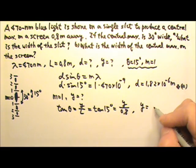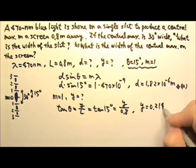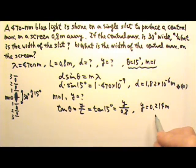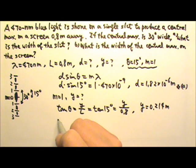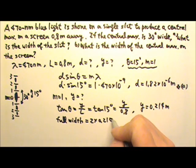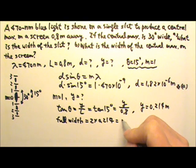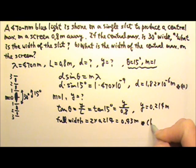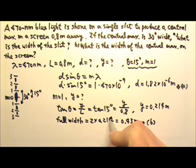So we'll find Y to be 0.214 meters. But this is only the half width. So I have to multiply this by 2 to get the full width. That will be 2 times 0.214, and I'm going to get 0.43 meters. And that's the answer for part B.